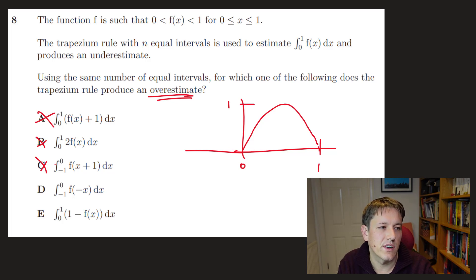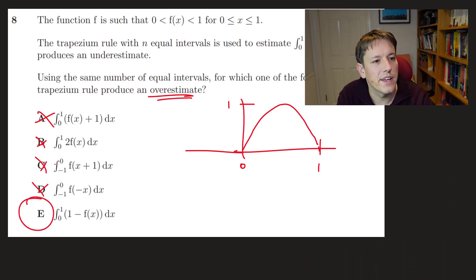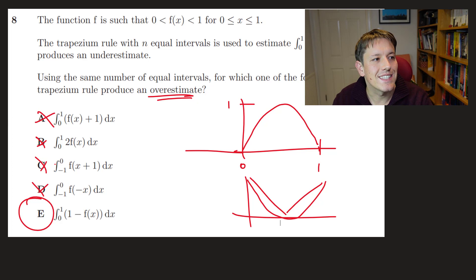Underestimate. But same 0 and 1 of F of minus x, well, 0 and minus 1, sorry, of F of minus x, well, that will just look something like this. And so it's still going to be an underestimate, so it must be E. And if you think about it, 1 minus F of x here, if I drew that one here, that's going to look more like this. And indeed, we would get an overestimate from the trapezium rule. So the answer is E.